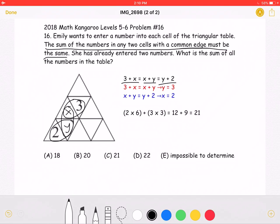If we take the first two equations, 3 plus X is equal to X plus Y, we can subtract X from both sides to get that Y is equal to 3.